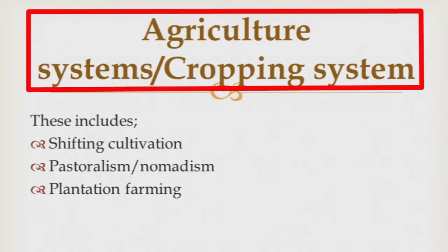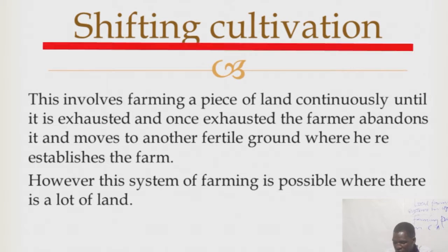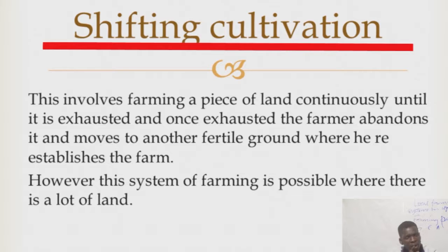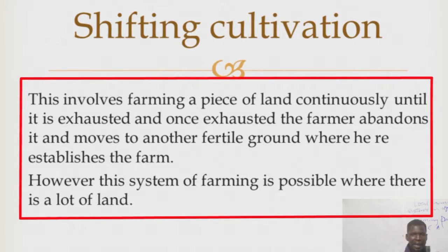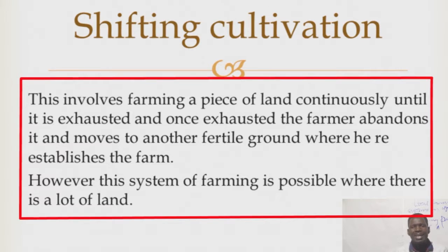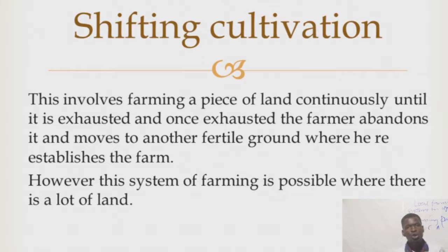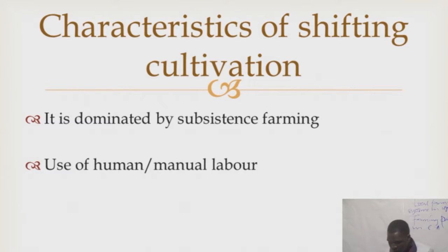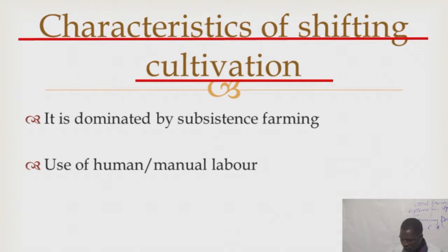We shall go to agricultural farming practices. Let us start with shifting cultivation. Shifting cultivation is where a farmer clears a piece of land — you clear a bush — and cultivates it. You put that piece of land under continuous cultivation until the soil is exhausted, then you move to a new piece of land.